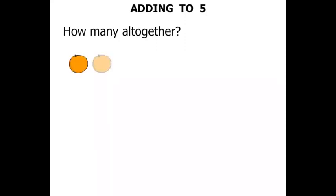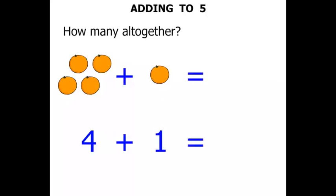How many all together? 2, 3, 4. We've got 4 oranges plus 1 orange equals... well, let's put the 4 down and the 1. How much all together?